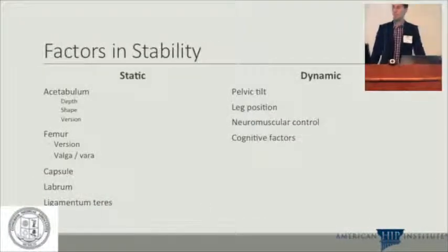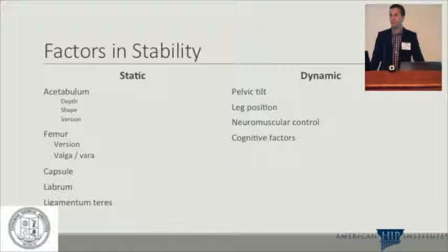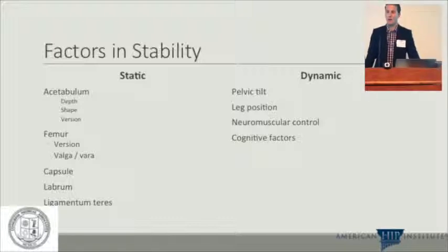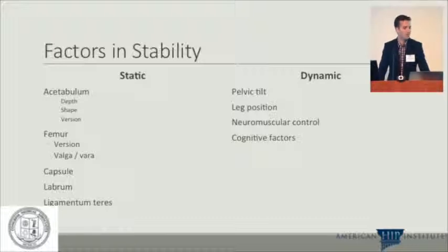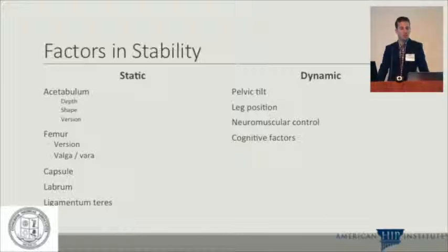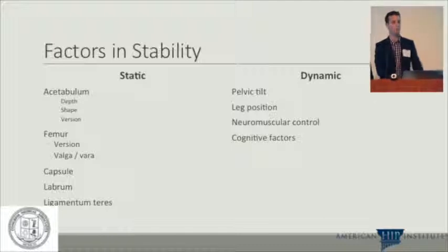Factors in stability include static and dynamic factors. Statically, you have acetabular depth, shape, and version; on the femoral side you have version, neck-shaft angle, and varus/valgus; and the capsule, the labrum, and the ligament of teres. Dynamically: pelvic tilt, limb position, neuromuscular control, and cognitive factors — all play a role in hip stability.